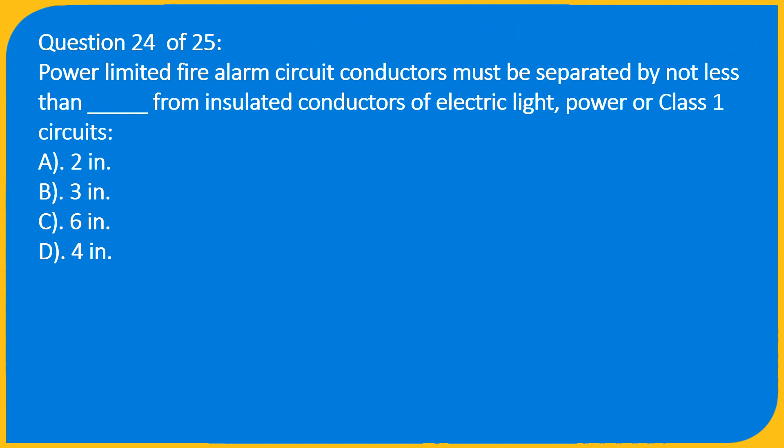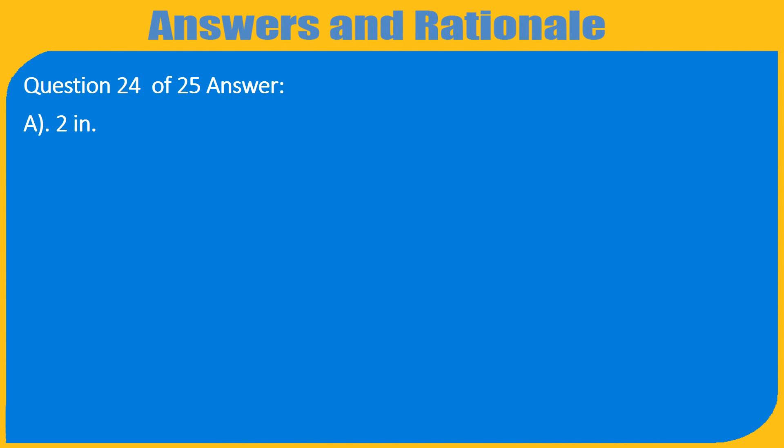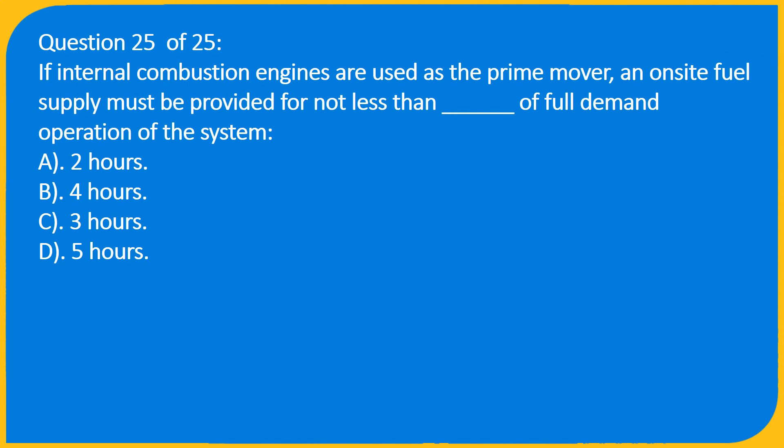Question 24 of 25: Power-limited fire alarm circuit conductors must be separated by not less than how many inches from insulated conductors of electric light, power, or Class 1 circuits? Answer: A. 2 inches.